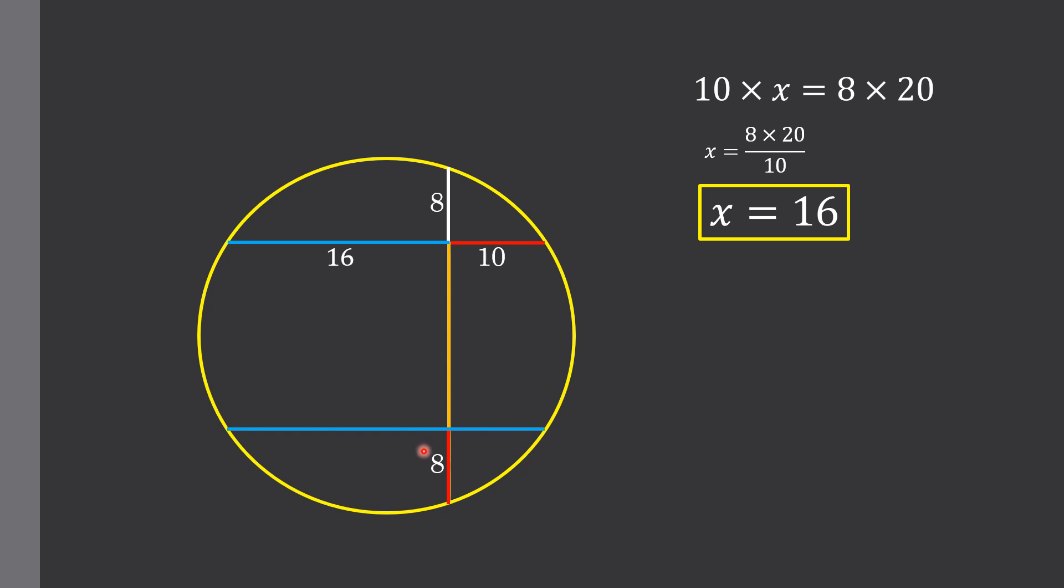This chord is equal to the sum of this blue and red line segment, meaning the length of this chord is equal to 16 plus 10, that is equal to 26. From here, this length becomes 12 units.